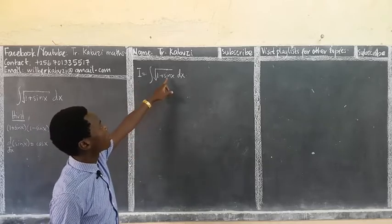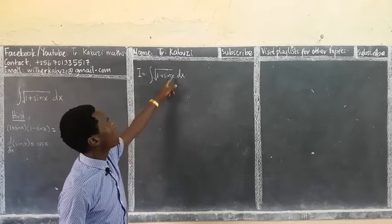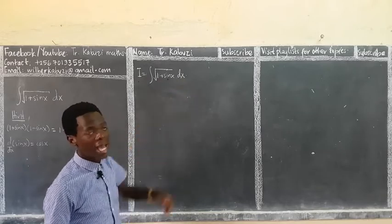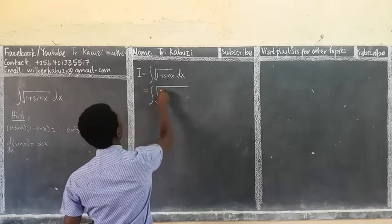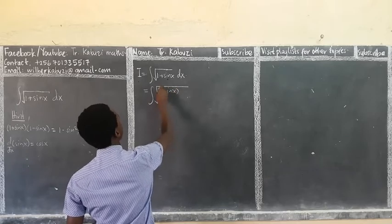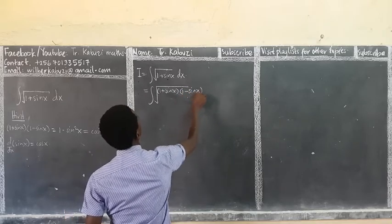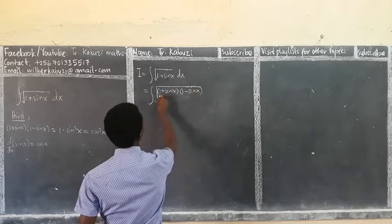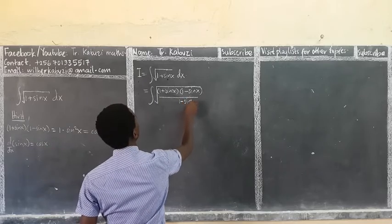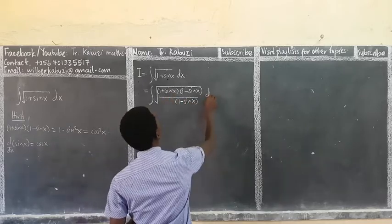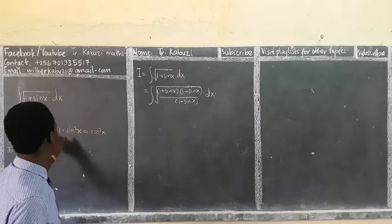Let I be the integral. What I'm going to do first is create a derivative of sin x, which is cos x. I'll multiply by (1 - sin x) over (1 - sin x) — up and down — so the integral becomes the integral of √(1 + sin x) multiplied by (1 - sin x), all over (1 - sin x), dx. I've multiplied by something that wasn't there, so I must also put it in the denominator.